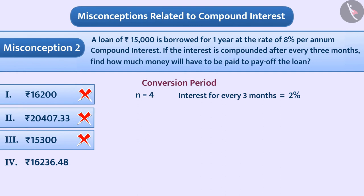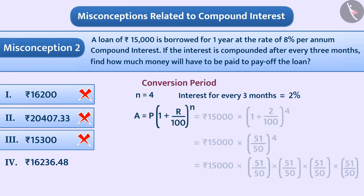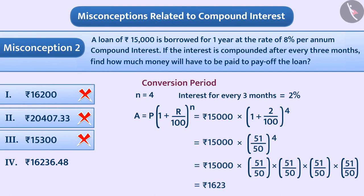Now, we can get the payable amount with the help of this formula. By putting values in it, we will get the total amount of 16,236.48 rupees. Hence, option 4 is the correct answer.